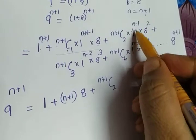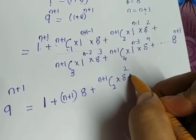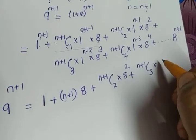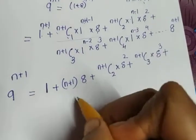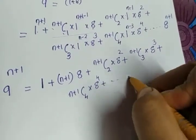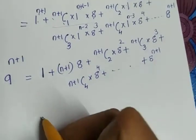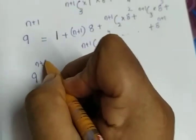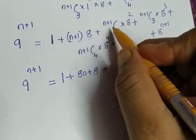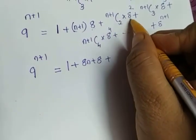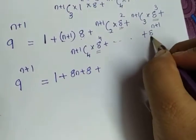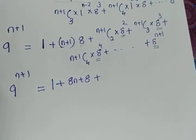Since 1 raised to any power is 1, all the 1^k terms simplify to 1. So 9 raised to n+1 = 1 + (n+1)·8 + (n+1)C2 · 8² + (n+1)C3 · 8³ + (n+1)C4 · 8⁴ + ... + 8^(n+1). Looking at the constants: 8² appears in all terms from (n+1)C2 onwards, so 8² is common from that term onward.